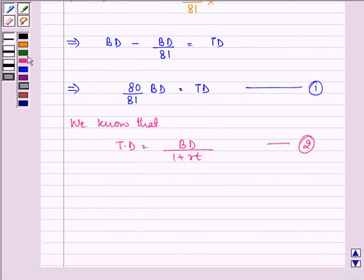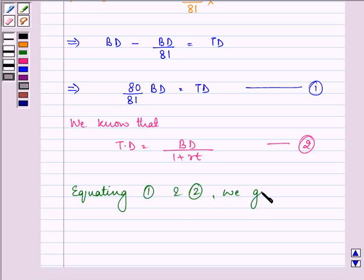Now equating the first and second equation we get 80 upon 81 BD is equal to BD upon 1 plus RT. Let us simplify it.